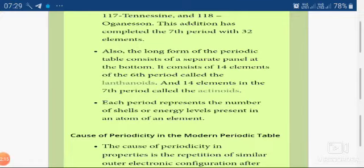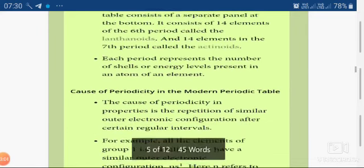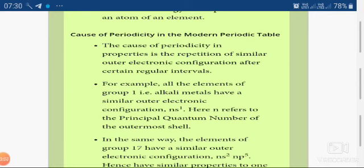Each period represents the number of shells or energy levels present in an atom of an element. It means each period corresponds to the principal quantum number and the energy level or shell number of that atom. When a new period begins, a new shell is added and the electron enters into a new energy level. That covers the long form of the periodic table. The next point is the cause of periodicity, which will be seen in the next lecture. Thank you.